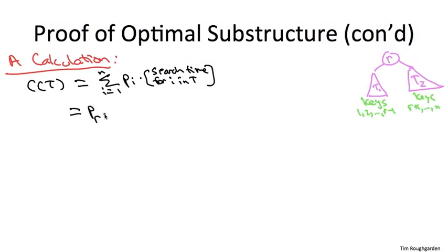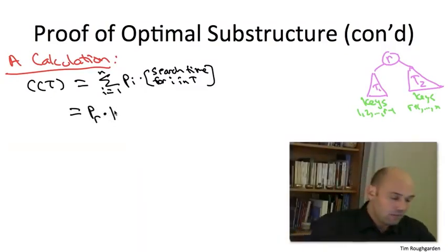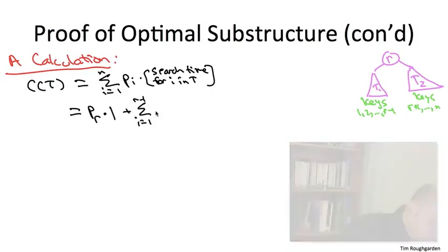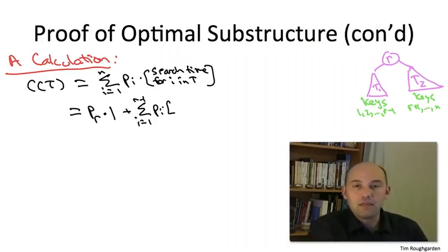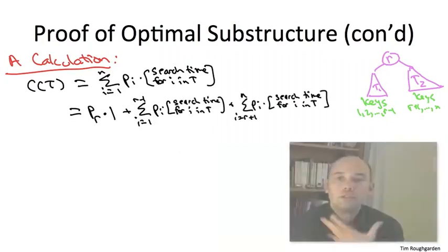So the sum corresponding to the root r contributes the frequency of r times the search time for r, namely 1, because it's the root. And then we have our sum over just the items up to r-1 of their frequencies times their search times, and similarly, those r+1 up to n, their frequencies times their search times in T.